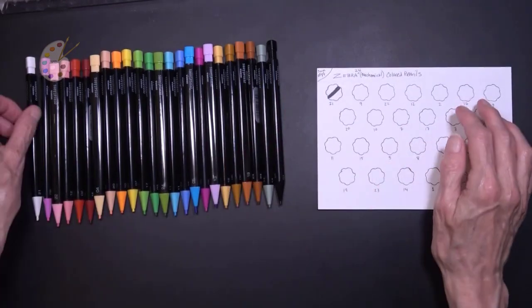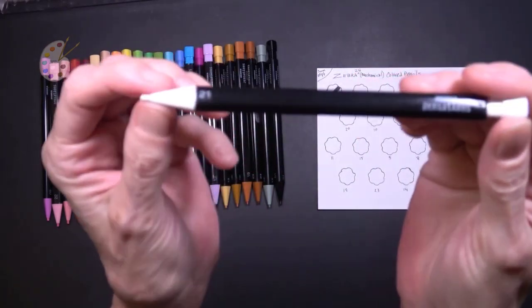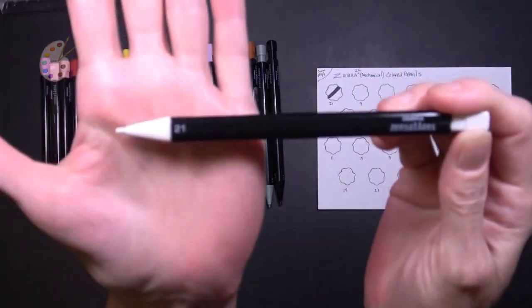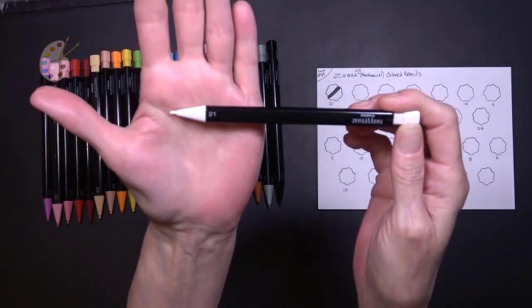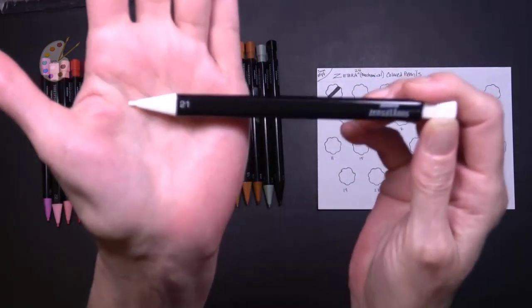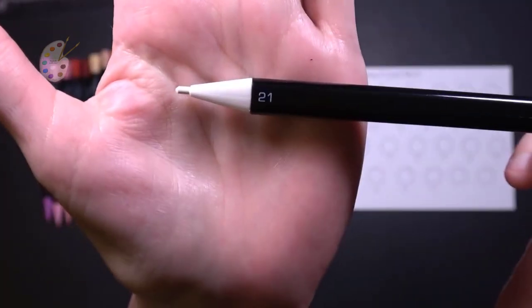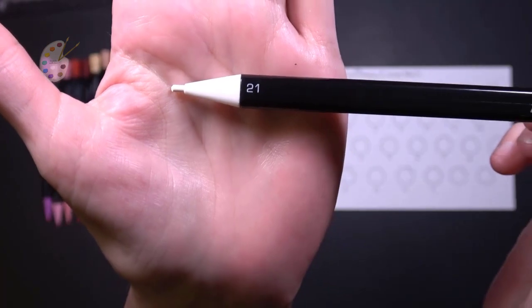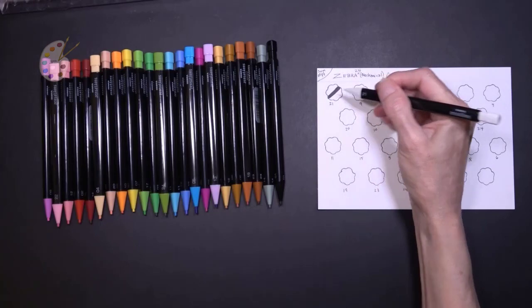So these have only numbers instead of names. Obviously, this is white. And it's this number. What number is that? 21. And that is horrible. There we go. 21.